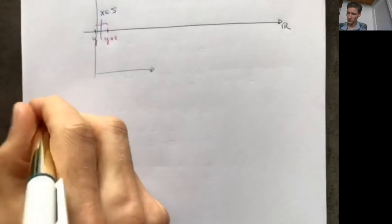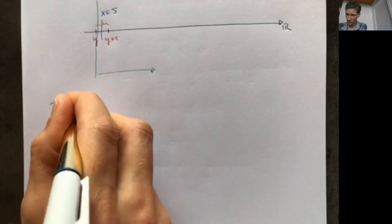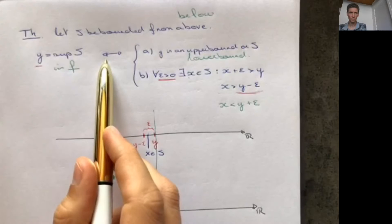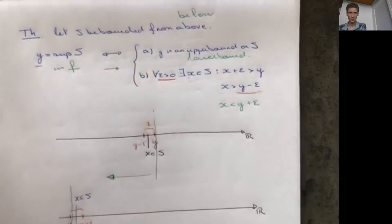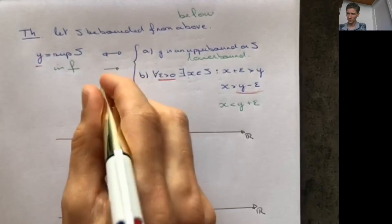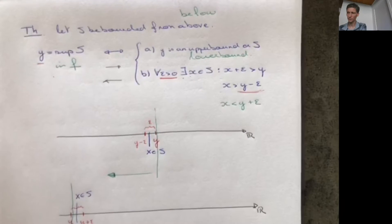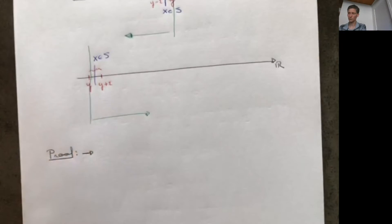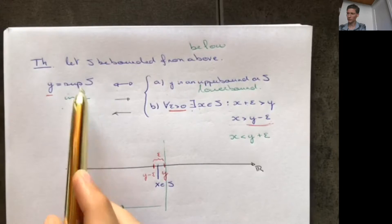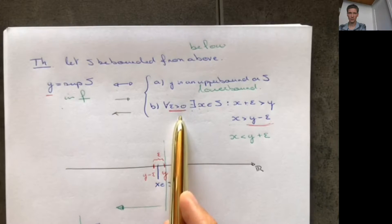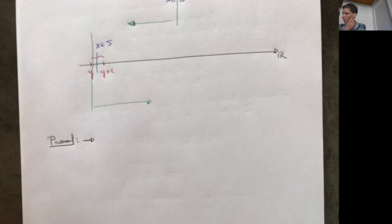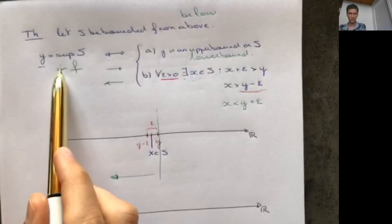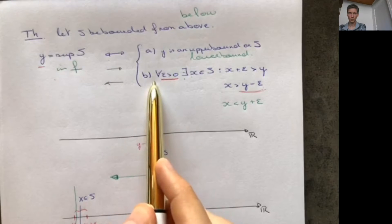We're going to prove this result. This is an if and only if condition, so we have an implication from the left to the right and an implication from right to left. Let's first go from left to right. We know that Y is the supremum of S, and we need to show condition (a) — that Y is an upper bound — and condition (b) — that for all epsilon bigger than zero, there exists an X in S such that X is bigger than Y minus epsilon.